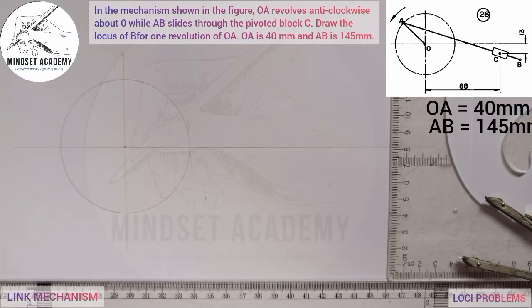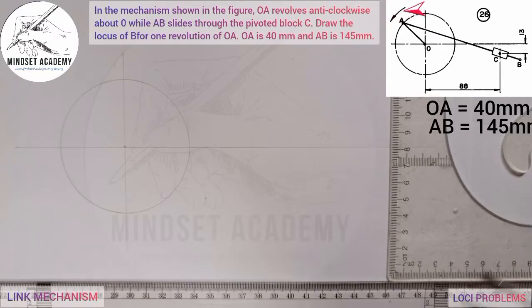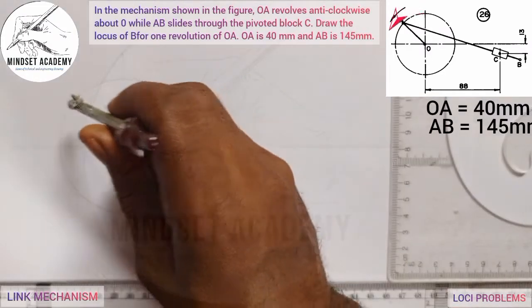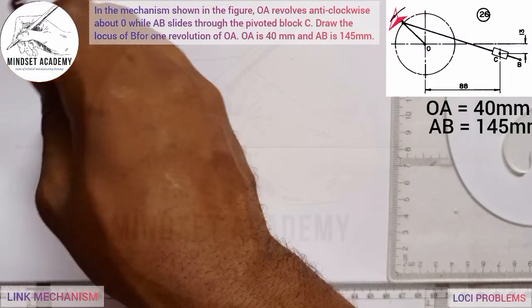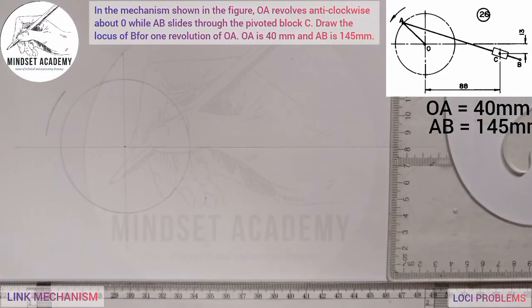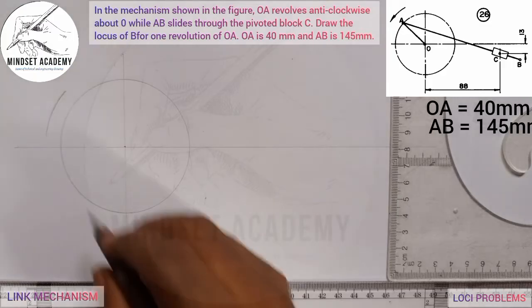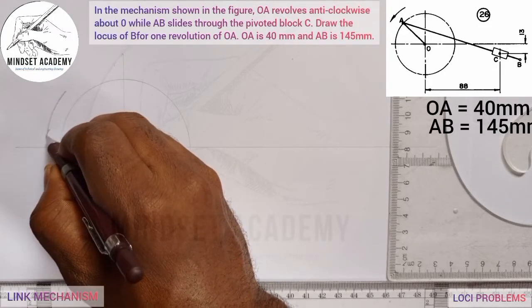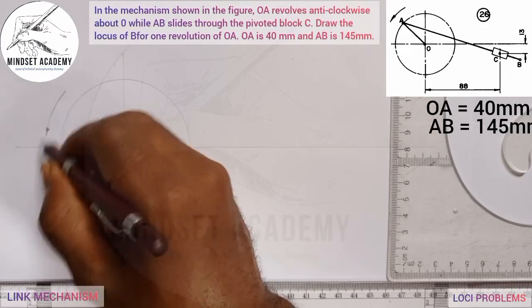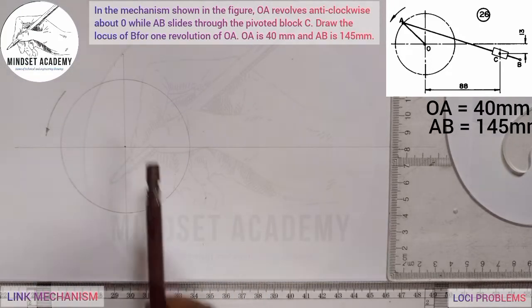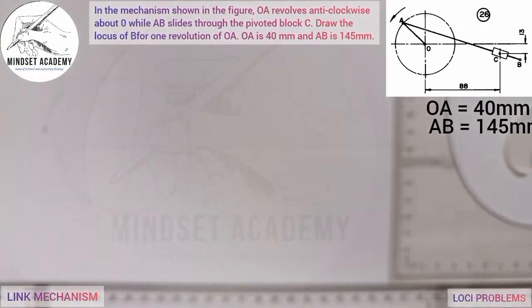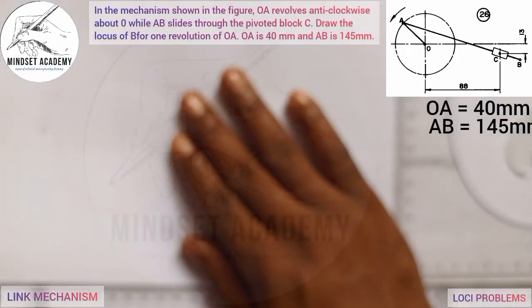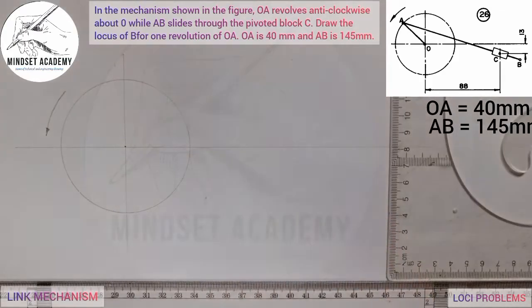We are told that this crank rotates anti-clockwise, rotating in this manner. I need to draw a line to show the anti-clockwise direction. I'll divide this crank into 12 equal parts.